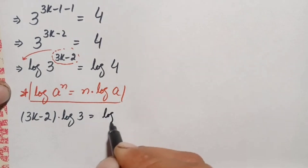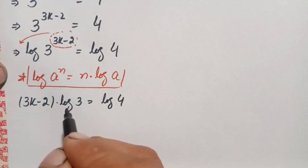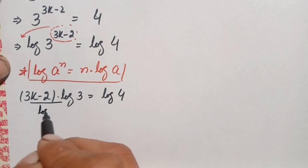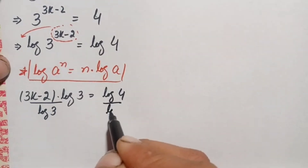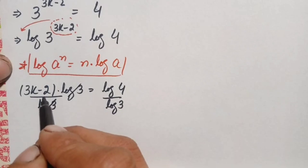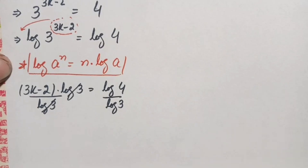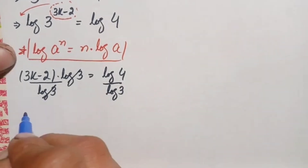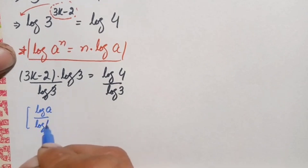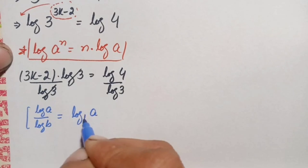To isolate k, we divide both sides by log 3. The log 3 terms on the left cancel, leaving 3k − 2. On the right hand side, we apply the change of base identity: log a divided by log b equals log of a with base b.